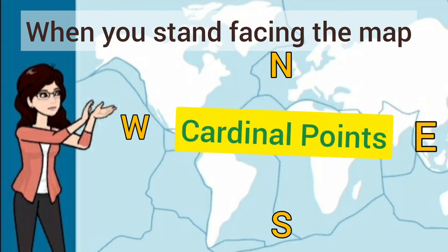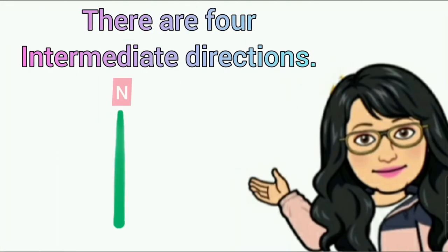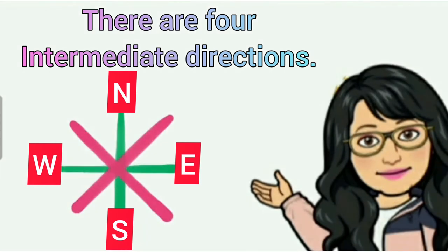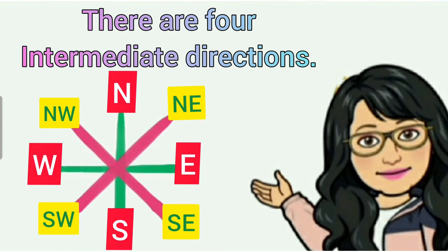Apart from cardinal directions, there are four other intermediate directions. They are northeast, southeast, southwest, and northwest. These intermediate directions are very helpful in locating any place more accurately.